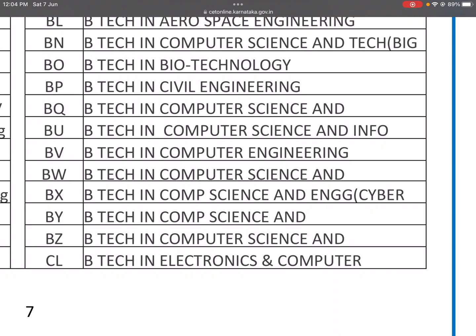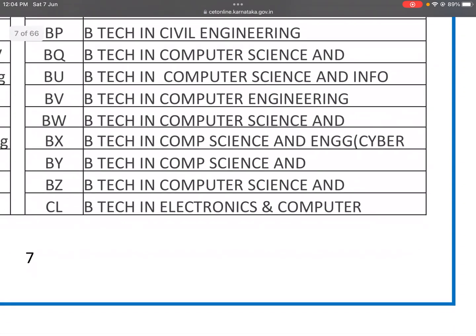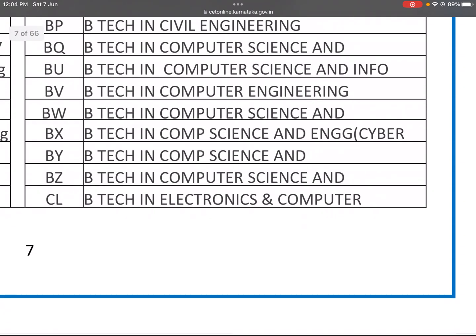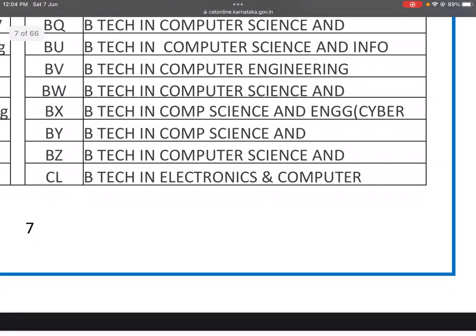BQ is B.Tech in Computer Science and Engineering. Another BQ variant is Computer Science and Information Science. BVA is B.Tech in Computer Engineering. BW and BX are B.Tech in Computer Science and Engineering. BY is B.Tech in Computer Science and Engineering with Cyber Security.